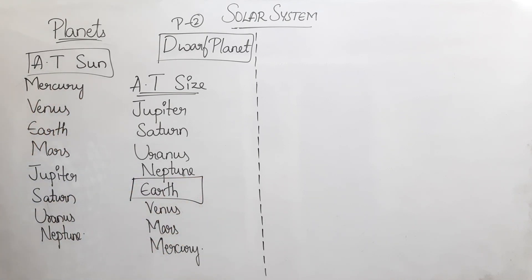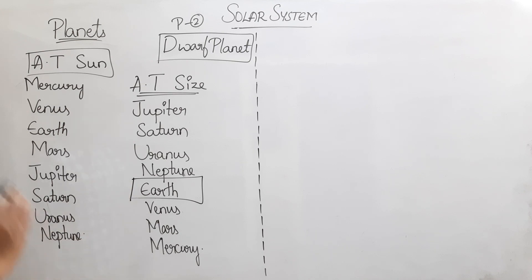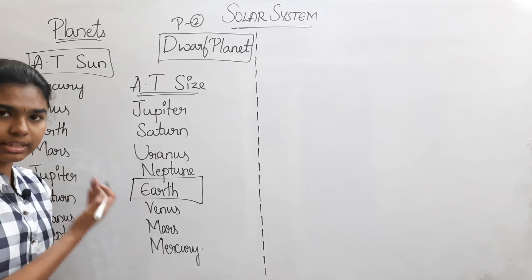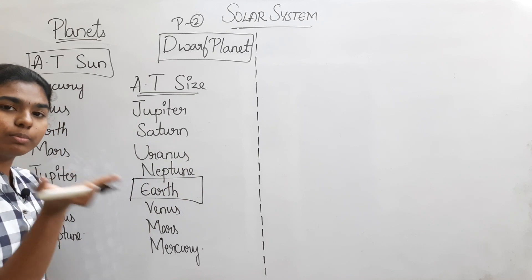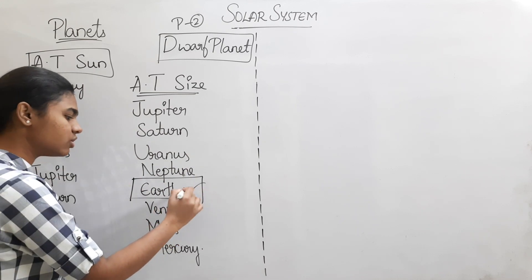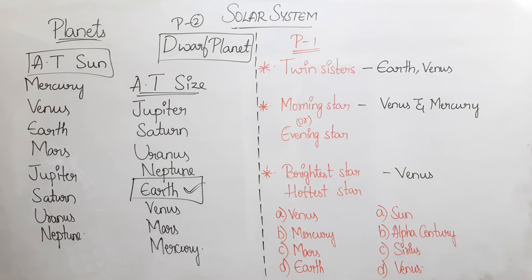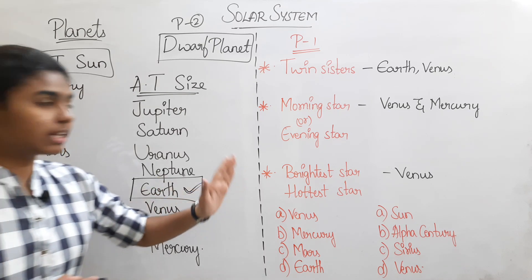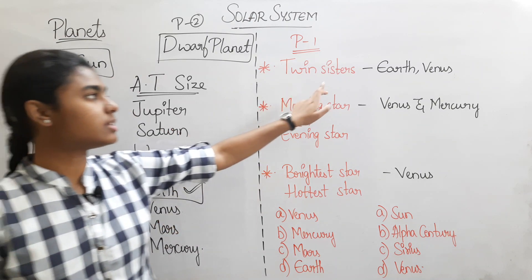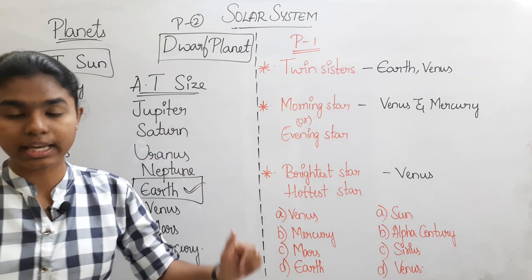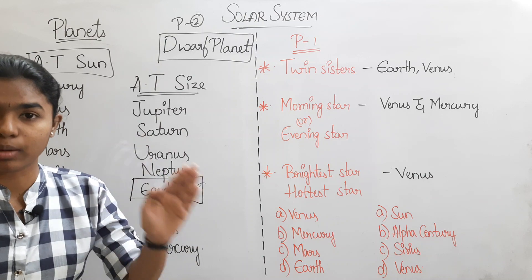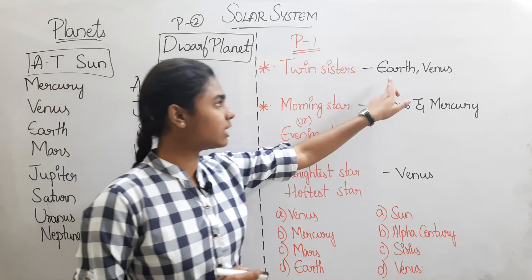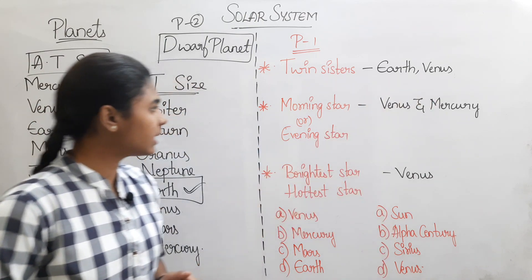In the fifth position by diameter, the answer is Earth. The planets called the Twin Sisters are Earth and Venus, because they are similar in size.